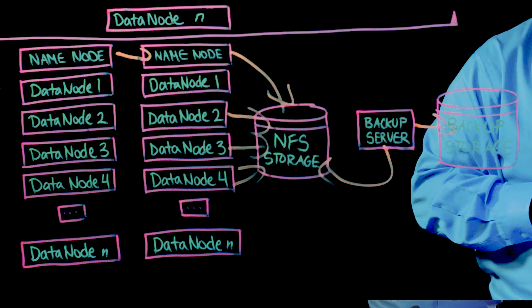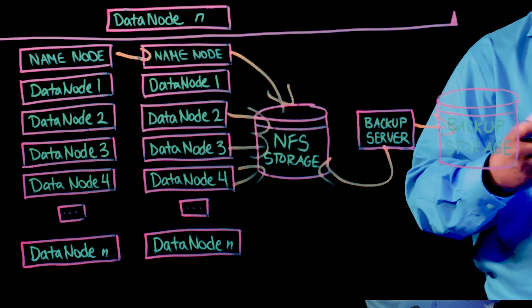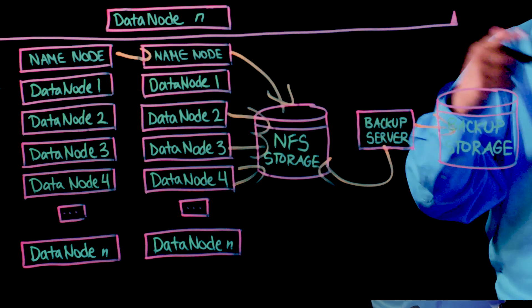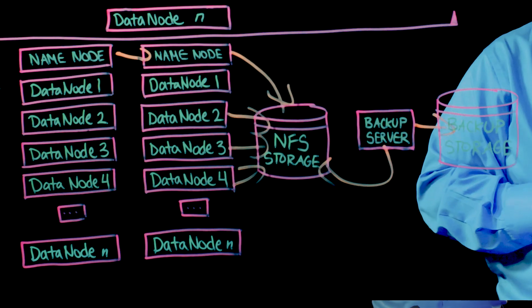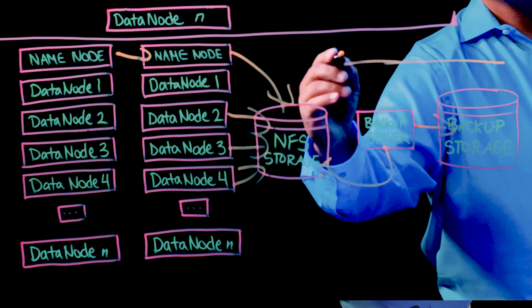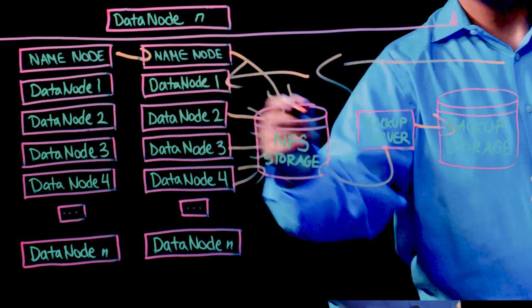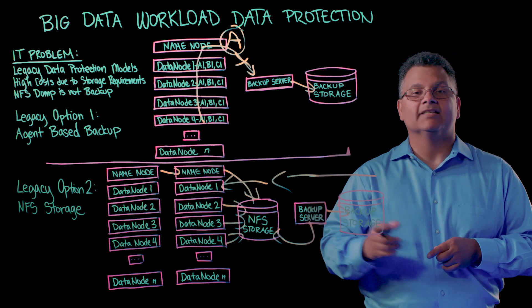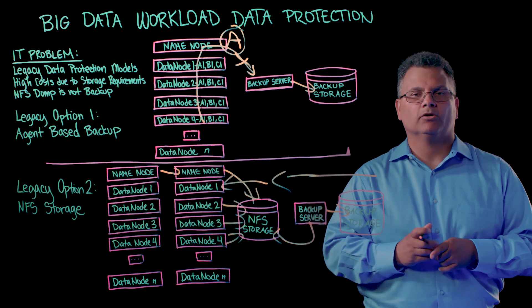That's another petabyte of data. So I'm moving a good amount of data through this, and it's redundant data. From a cost standpoint, this is very high. The other challenge is from a recovery standpoint, I need two recovery steps: step one, to move the data to the NFS server, and step two, to move the data back into the cluster. This approach is not designed to solve the problems of protecting a large workload like Hadoop.